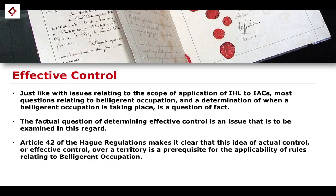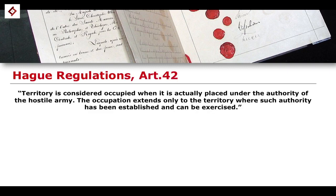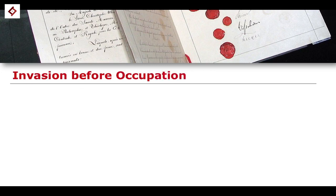Article 42 of the Hague Regulations makes it very clear that this idea of actual control, or effective control, over the territory is a prerequisite for the applicability of the rules relating to the law of occupation. Going back to Article 42 specifically, it is essentially a requirement for a territory to be considered occupied that it is placed under the actual authority of the hostile army. This raises an interesting question.